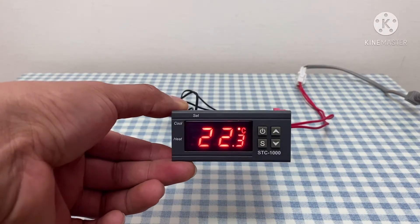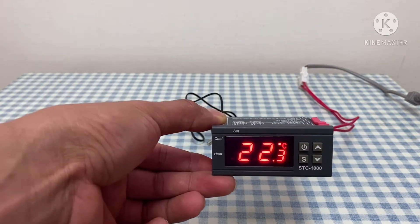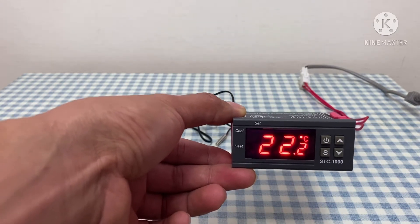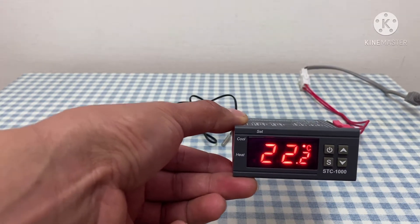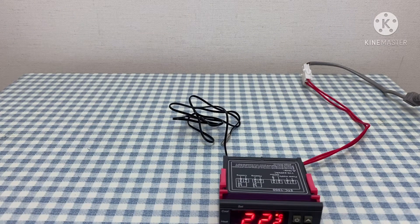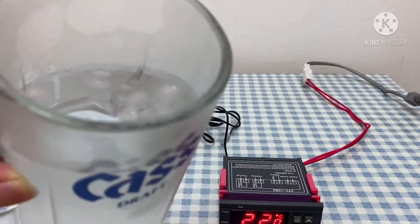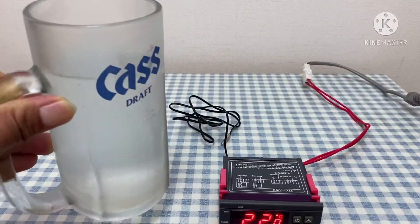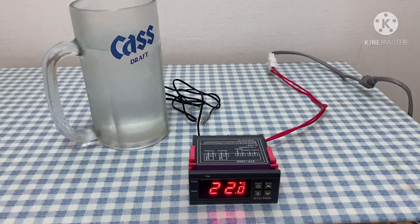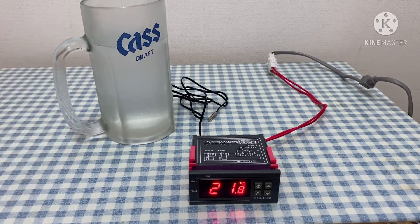The next thing we need to do is calibrate this so we can have the accurate temperature in order to incubate the eggs properly. What we need is a mug of ice cold water, so we have ice and water inside of it. As we know, the principle is that the freezing temperature of water is zero degrees Celsius.